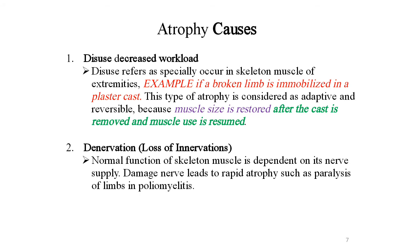Atrophy cause: decreased workload, which refers especially to skeletal muscles of extremities. Example: if a broken limb is immobilized in a plaster cast, this type of atrophy is considered adaptive and reversible, because muscle size is restored after the cast is removed. Jaise haath mein fracture aane par plaster karwane se size thoda chota ho jaata hai, lekin plaster hatane par normal size par restore ho jaata hai.